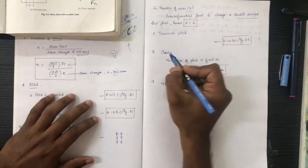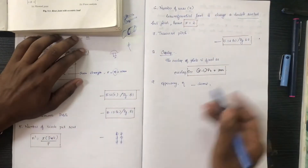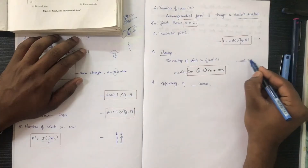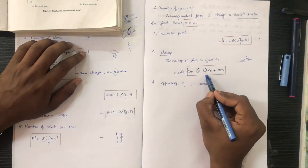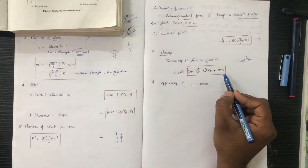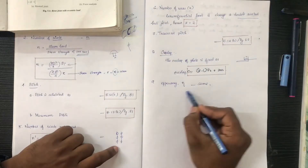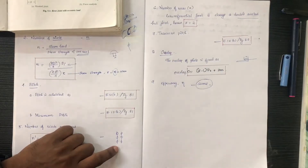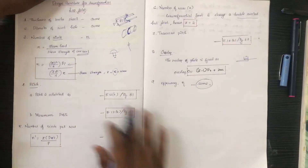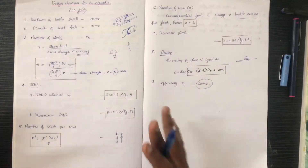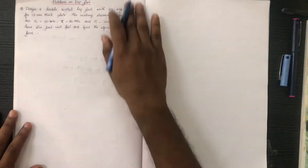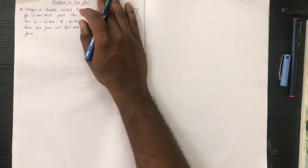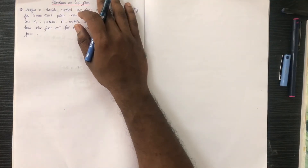For chain riveting and staggered riveting, the circumferential equation 5.14b gives Pt. For the overlap, the equation is (z minus 1) into Pt plus 2m. This covers the design procedure to calculate efficiency and differences between joint types.